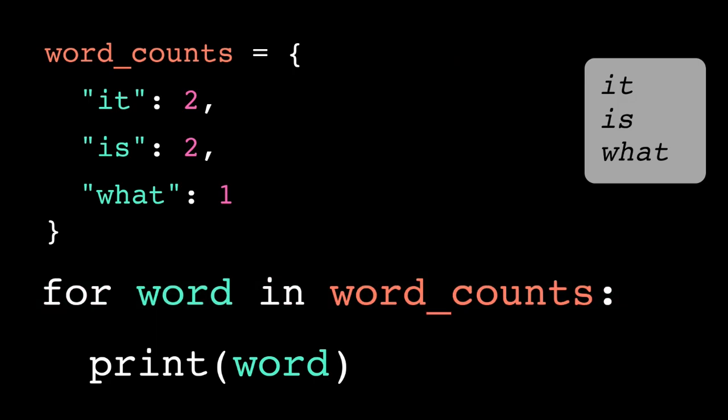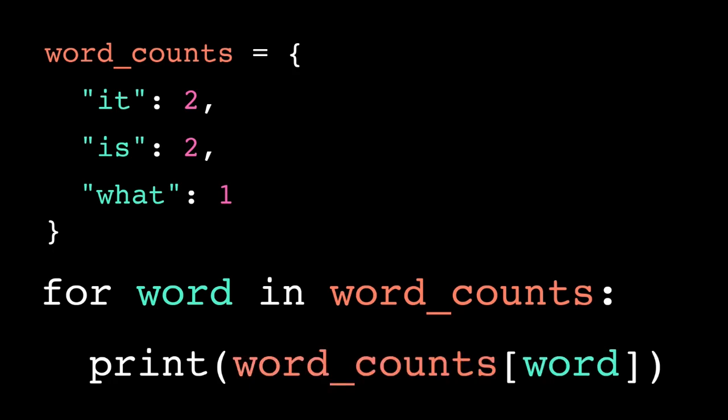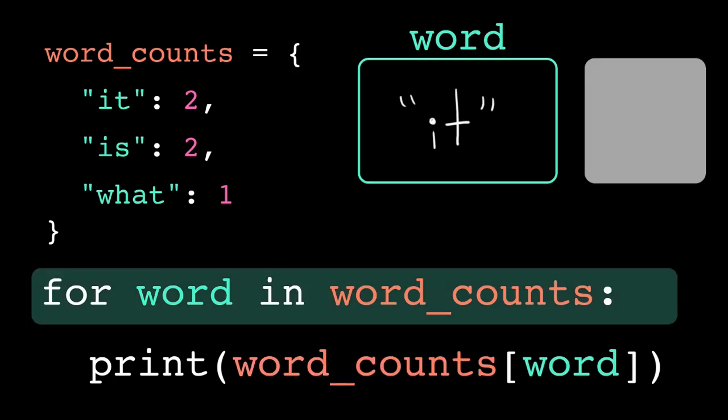If I want the associative value inside the loop body, I just access it using the key. So now this prints out its value, 2, is's value, 2, and then what's value, 1.